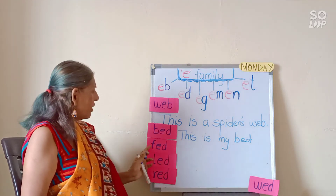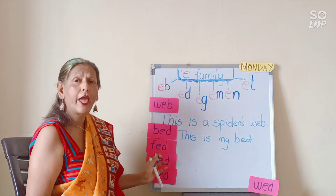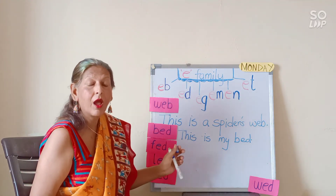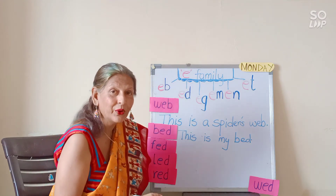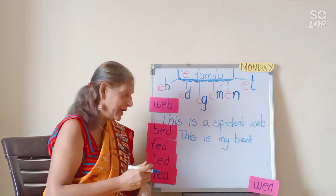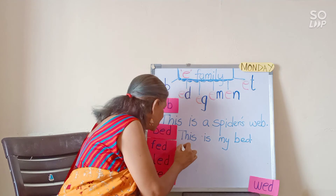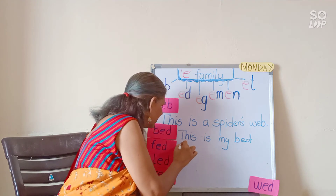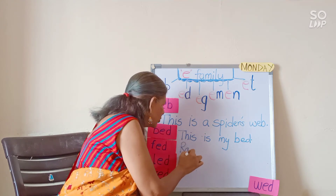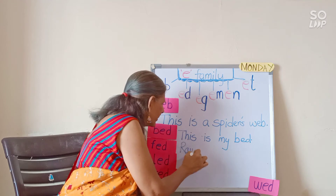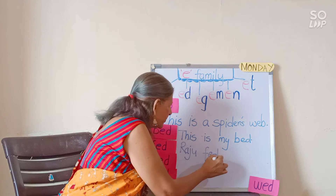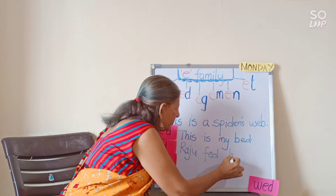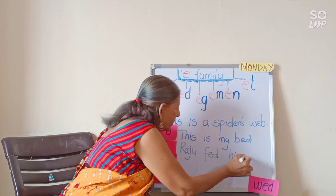Now, Fed — F, Ed, Fed. 'Raju fed his dog.' Fed means feeding. Let's frame this sentence: 'Raju fed his dog.' Capital letter on Raju.